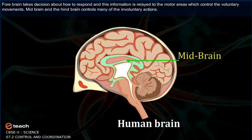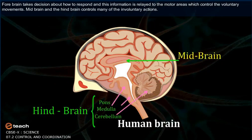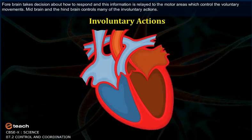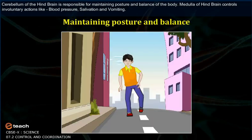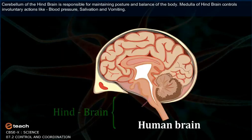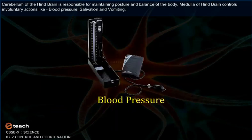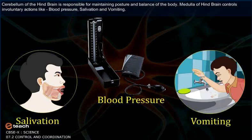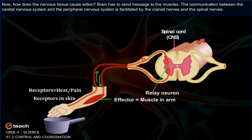The motor areas control voluntary movements. The midbrain and hindbrain control many of the involuntary actions. The cerebellum of the hindbrain is responsible for maintaining posture and balance of the body. The medulla of the hindbrain controls involuntary actions like blood pressure, salivation, and vomiting.